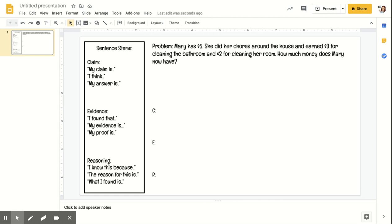Your claim is usually your answer. The different sentence stems are: my claim is, I think, my answer is. Your evidence is how did you get that answer. So I found that, my proof is, my evidence is.